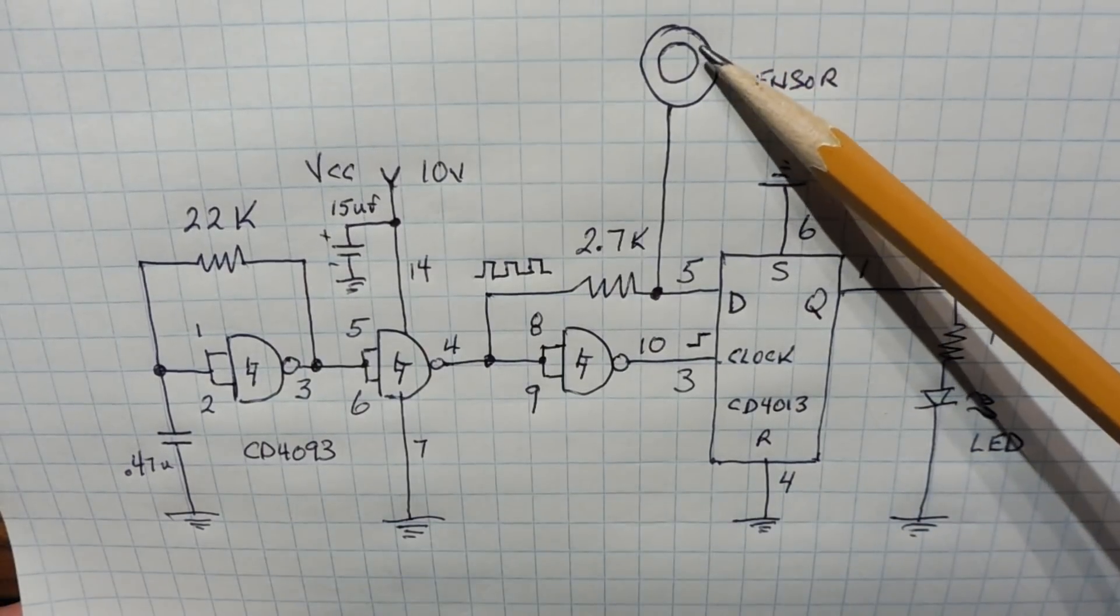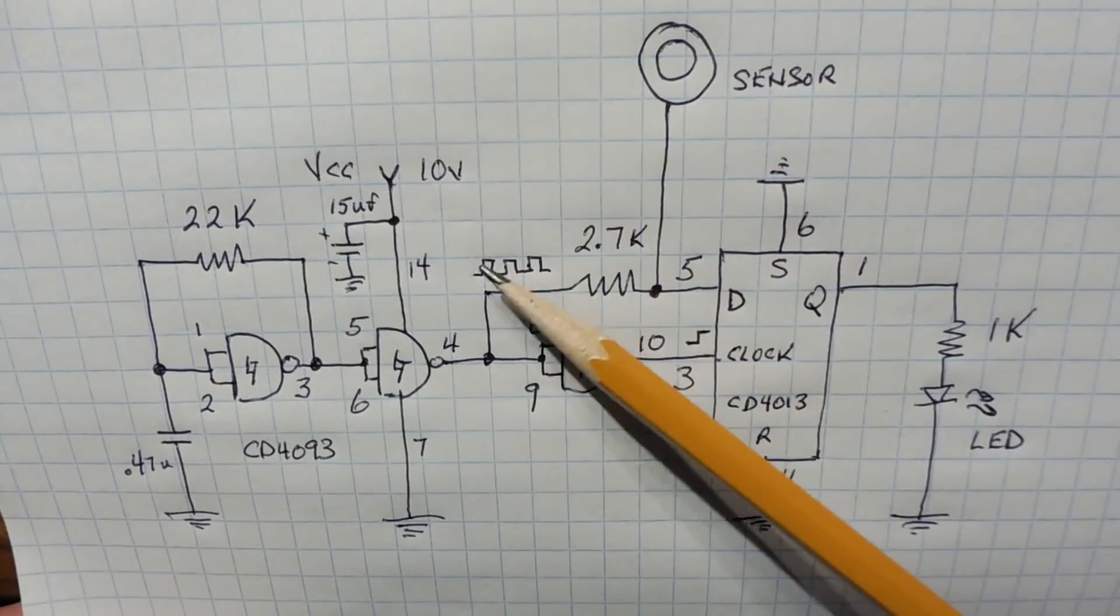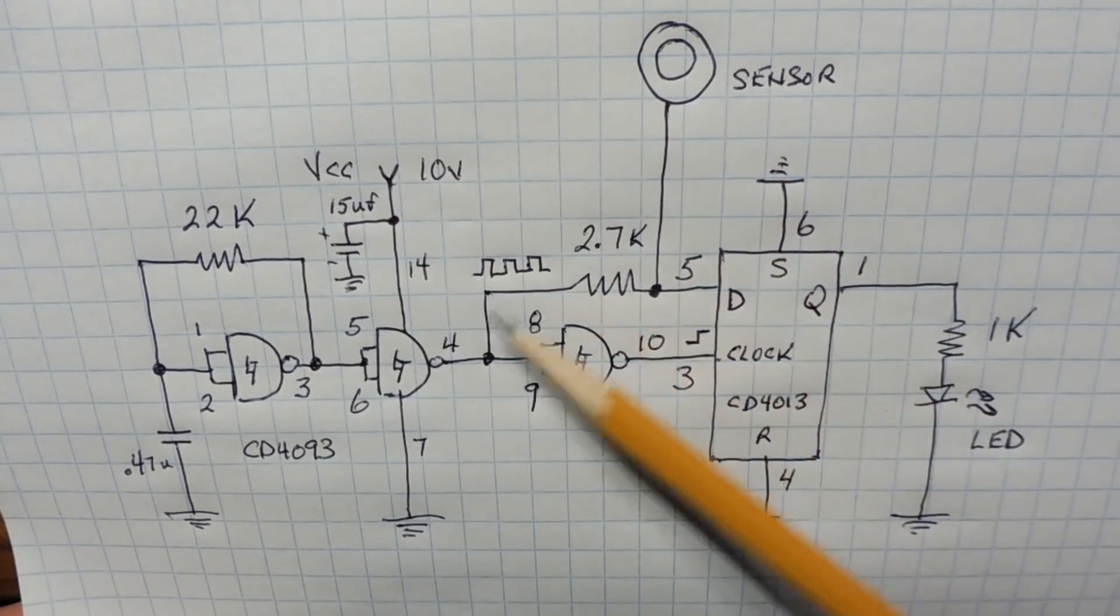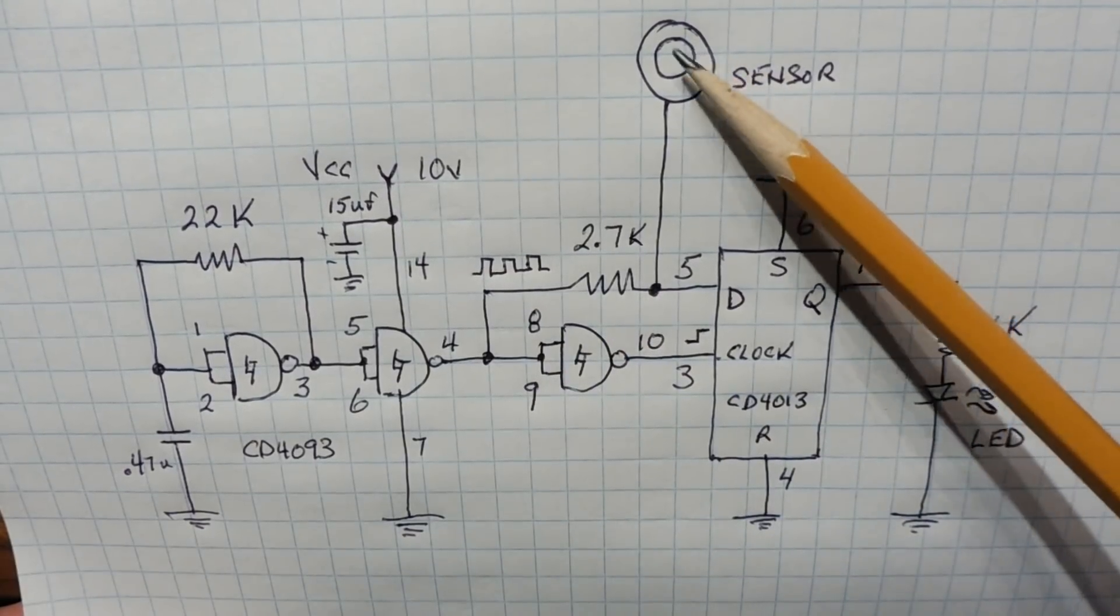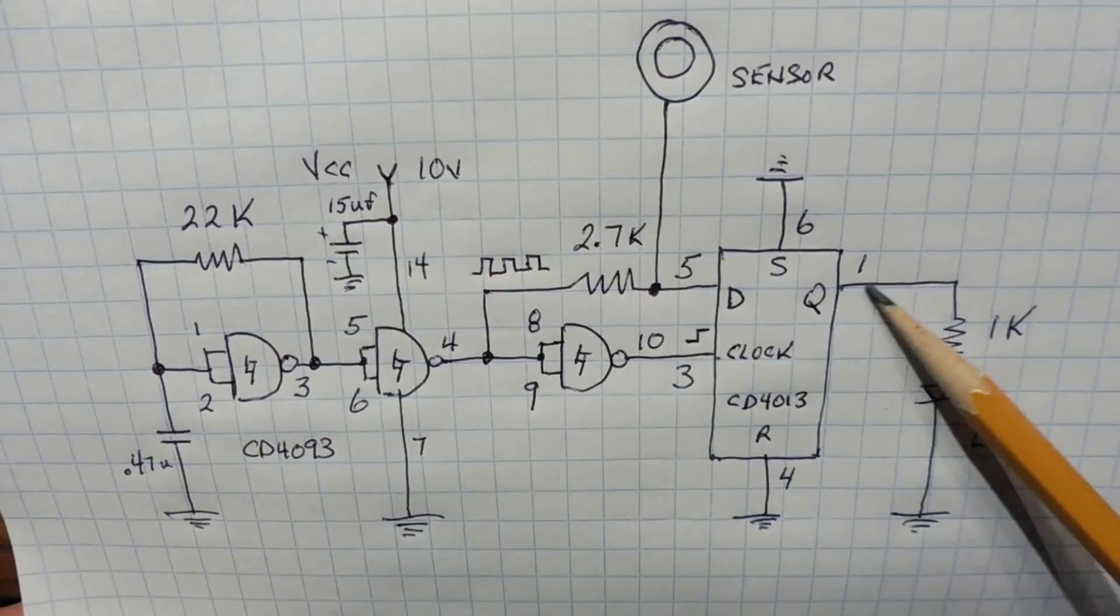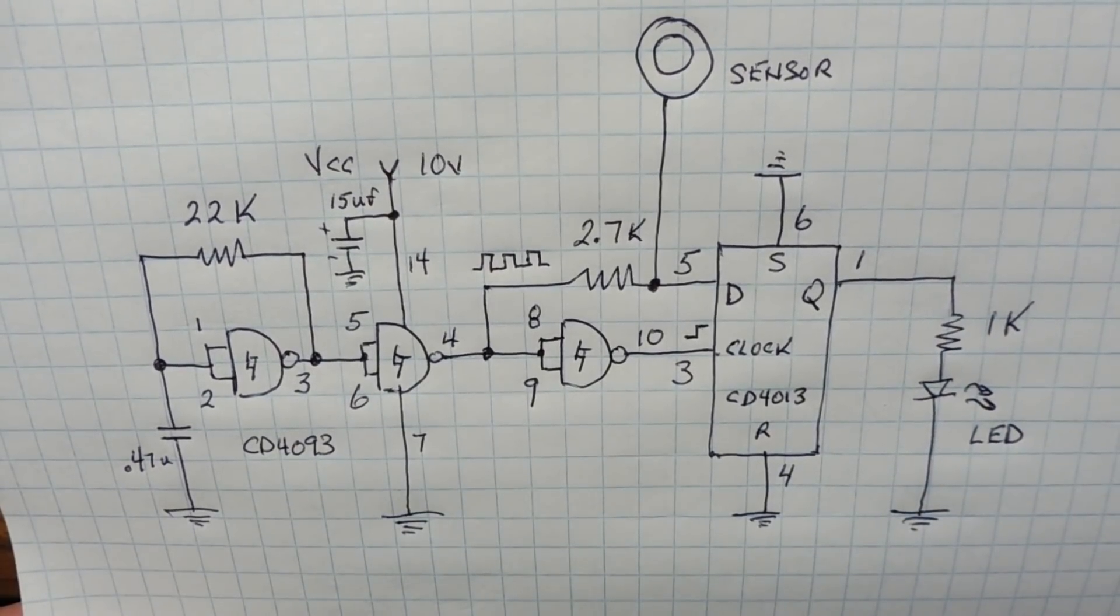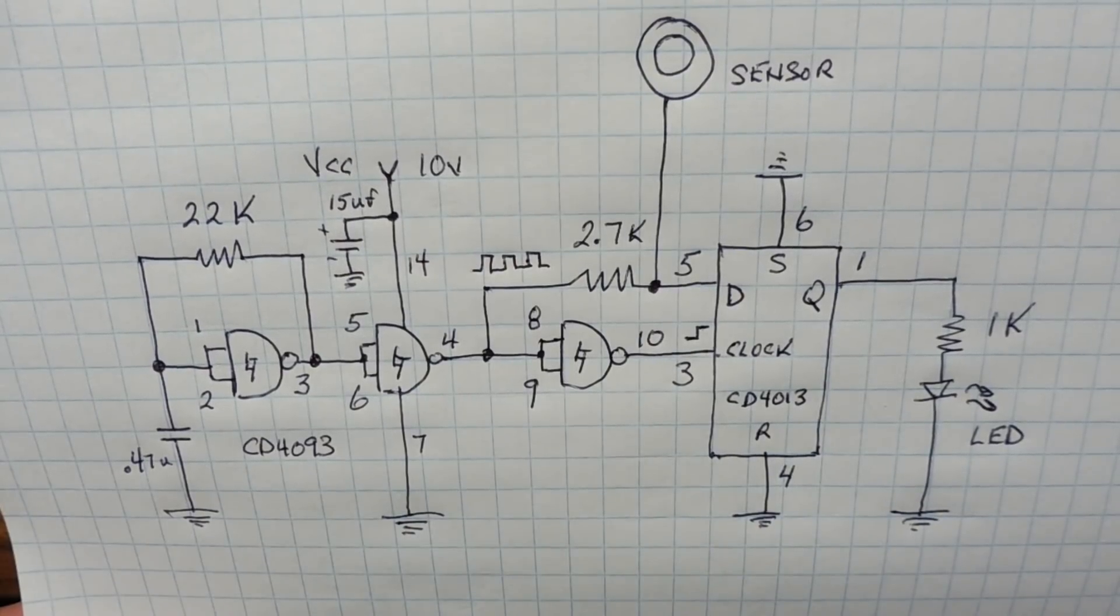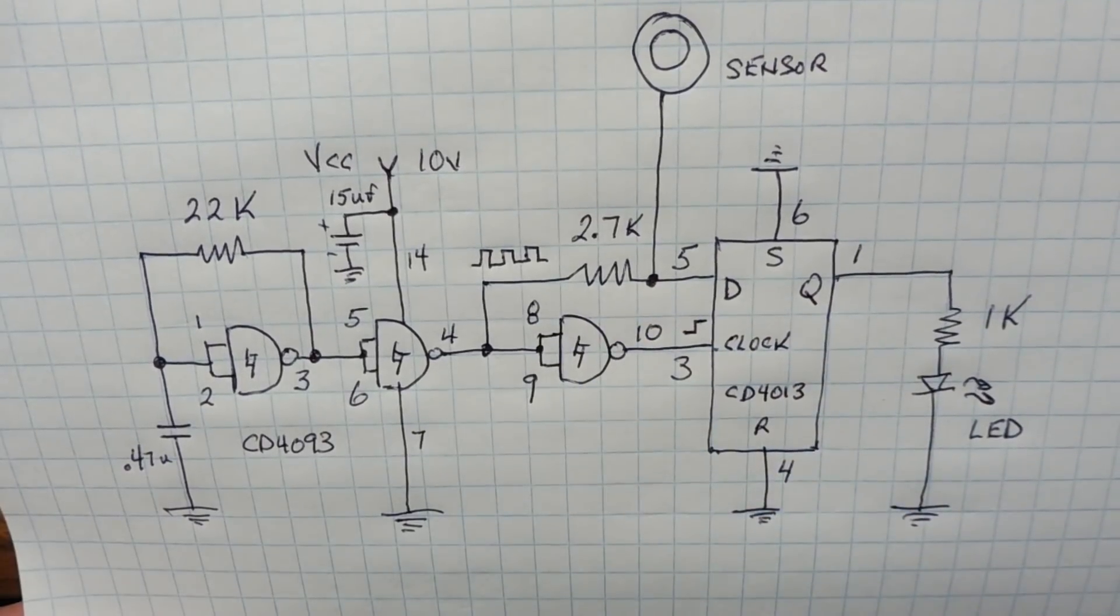So every time we touch the sensor, we're going to charge up the capacitor, and then when the clock goes low, it will be longer to discharge the capacitor than the propagation delay, and we'll get a one output. And when we release the sensor, then we'll get a zero output of the flip-flop. So that's basically how it works. We're learning about RC inverter oscillators, Schmidt trigger NAND gates, D flip-flops, and propagation delay, and how we could use it to our advantage.